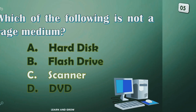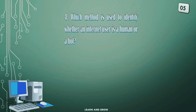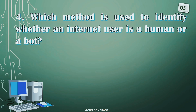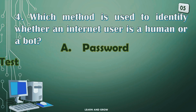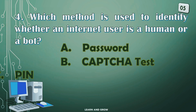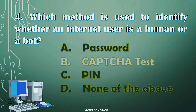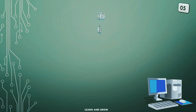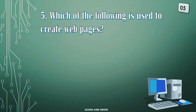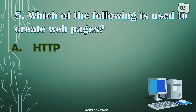Which method is used to identify whether an internet user is a human or a bot? Option A: Password, B: CAPTCHA Test, C: Pen, or D: None of the above. The right answer is Option B: CAPTCHA Test.